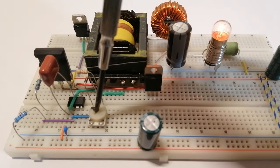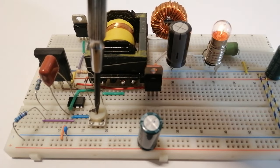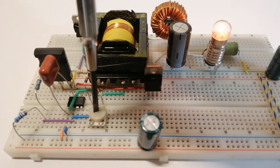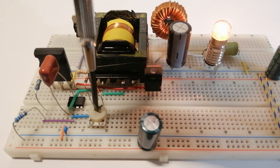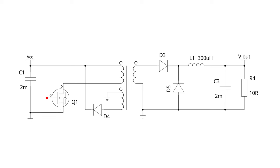This is a forward converter and the way it works is very similar to a buck converter but it offers the advantage of isolation between input and output. So if we look at the schematic we can try to understand how it works.